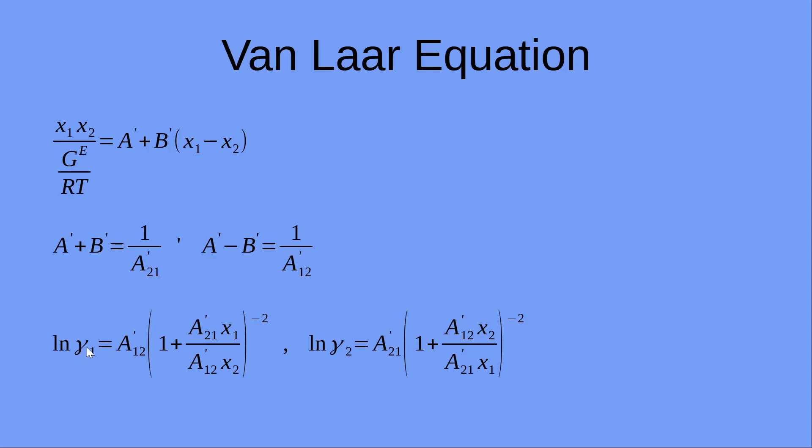We get ln gamma 1 equals A12' times (1 plus A12' X1 / A21' X2) raised to minus 2, and ln gamma 2 as A21' times (1 plus A21' X2 / A12' X1) raised to minus 2. Here also we can see that the Van Laar equation is a two-parameter model.